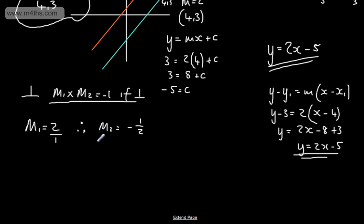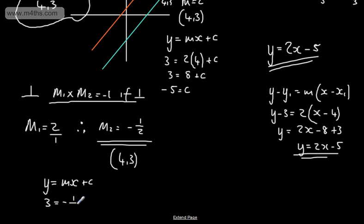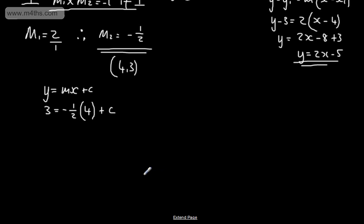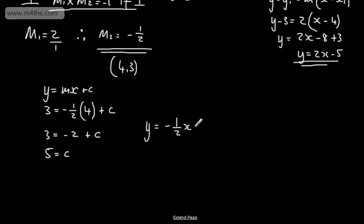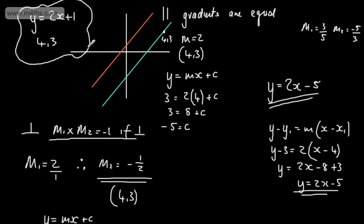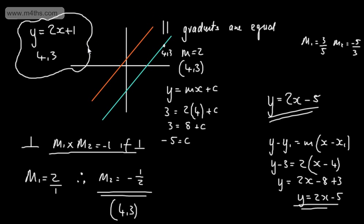Now we have gradient m2 equals minus 1 half and the point (4, 3). Substituting into y equals mx plus c: 3 equals minus 1 half times 4 plus c, giving 3 equals minus 2 plus c, so c equals 5. We can write the line as y equals minus 1 half x plus 5, and that is the equation of the line perpendicular to y equals 2x plus 1 through the point (4, 3).